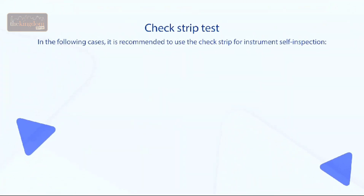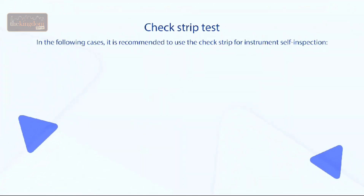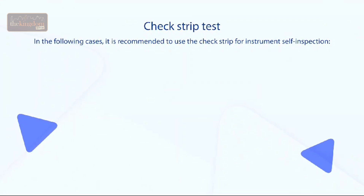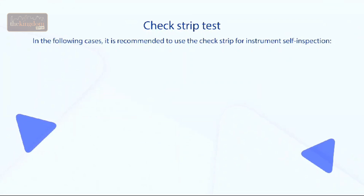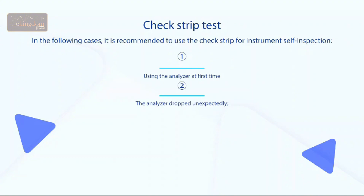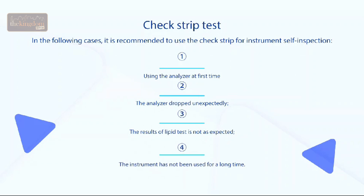Check Strip Test: In the following cases, it is recommended to use the check strip for instrument self-inspection: 1. Using the analyzer for the first time. 2. The analyzer dropped unexpectedly. 3. The results of the lipid test are not as expected. 4. The instrument has not been used for a long time.